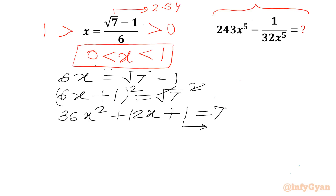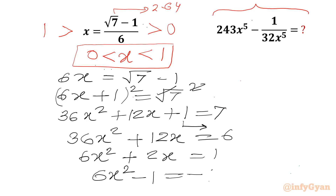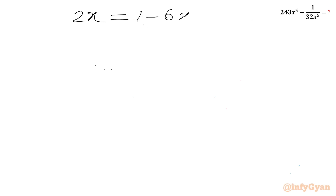Taking the 1 to the RHS gives 6, so 36x² + 12x = 6. Dividing this equation by 6 gives 6x² + 2x = 1. From this I can also write 6x² minus 1 = minus 2x, or equivalently 2x = 1 minus 6x².